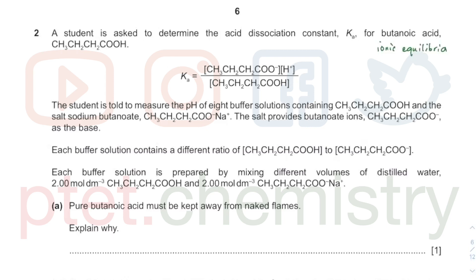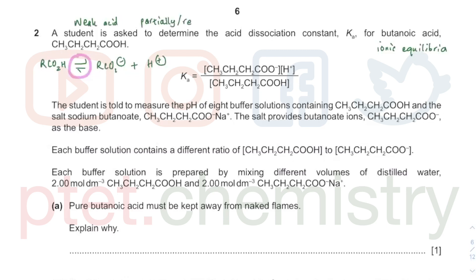So this Ka is for RCOOH going to RCOO⁻ plus H⁺ — this is a carboxylic acid, a weak acid. Can you define a weak acid for me? Student says 'it doesn't dissociate very well.' That's missing the point — Ka is not zero. You need to say it partially dissociates, or reversibly dissociates — and dissociates into what. That's the important definition.